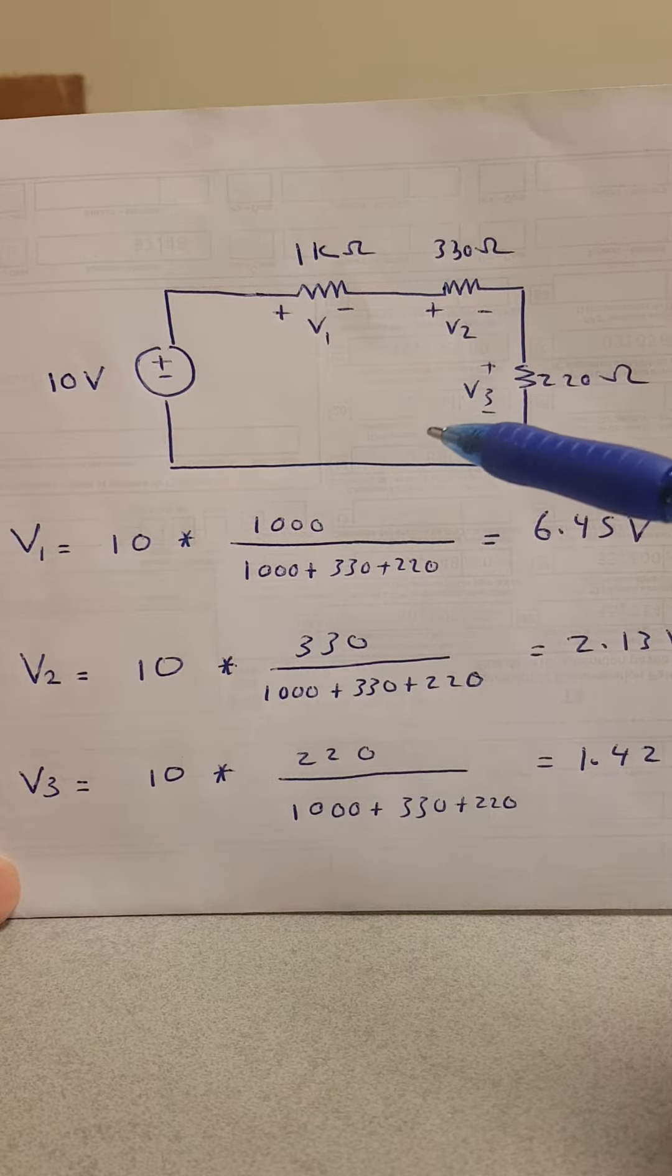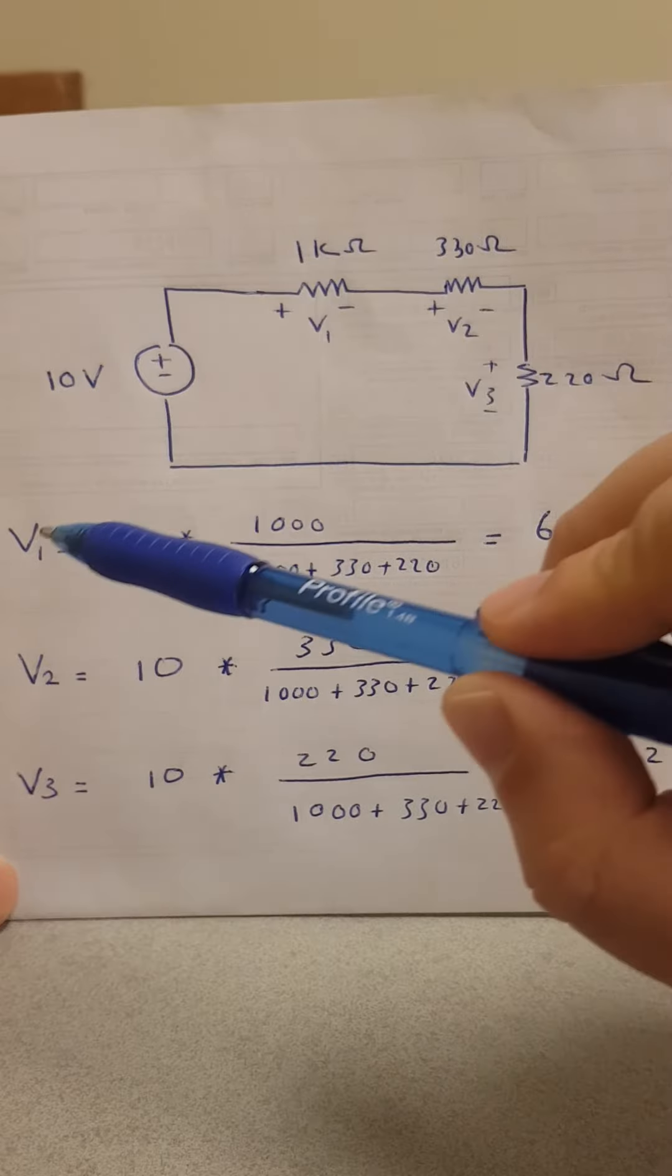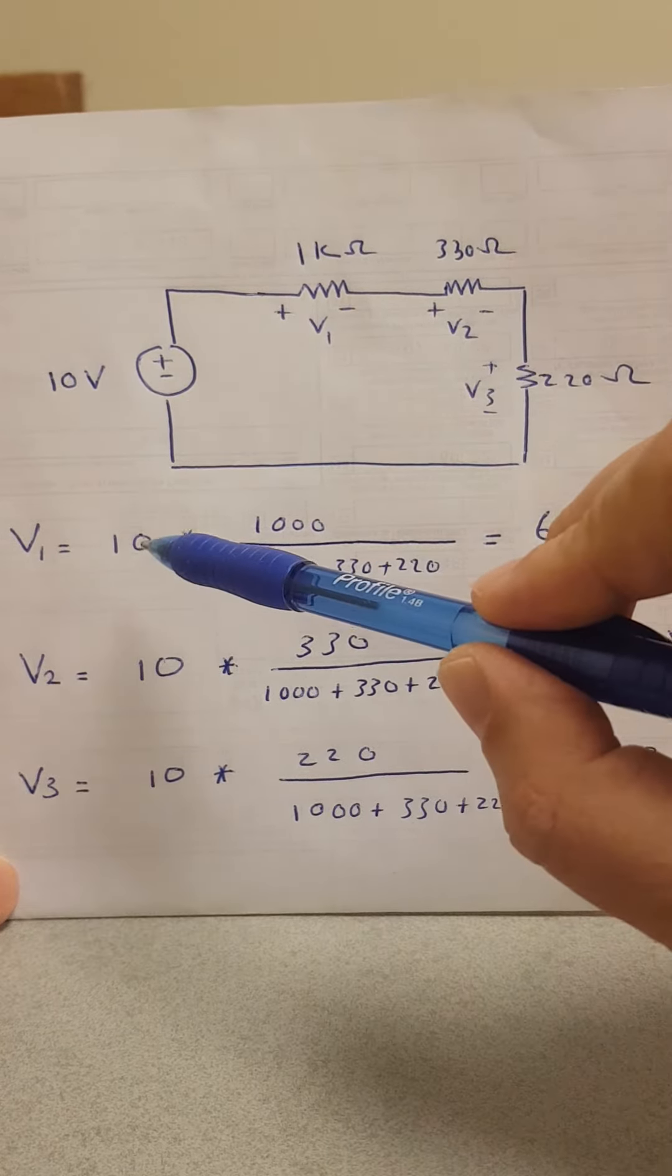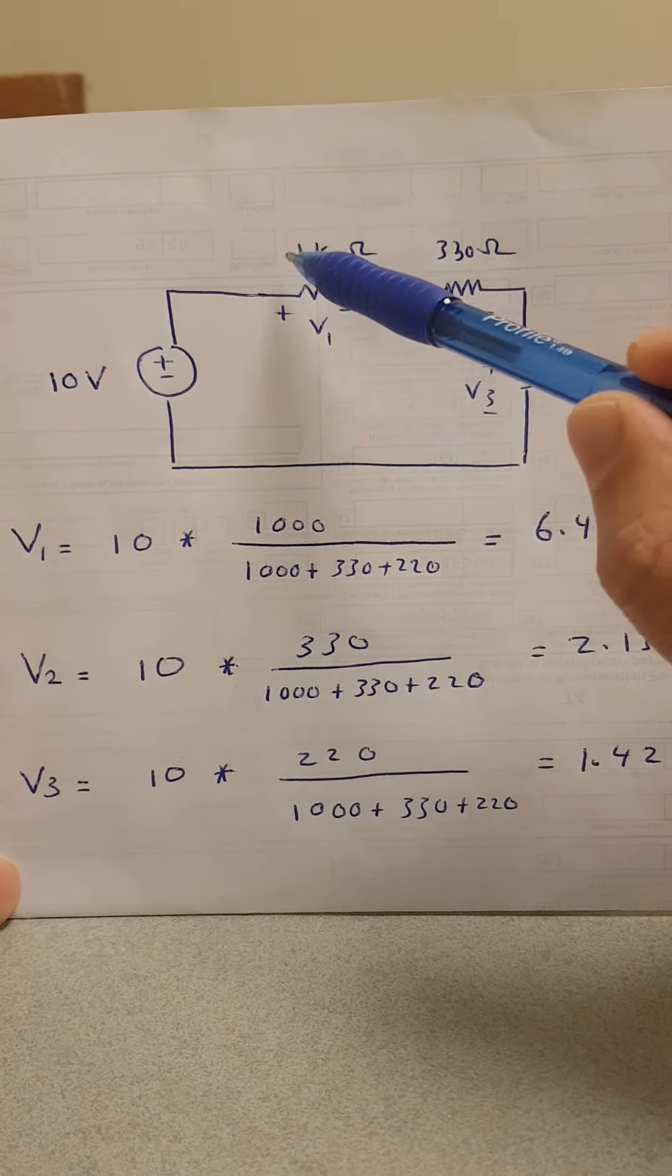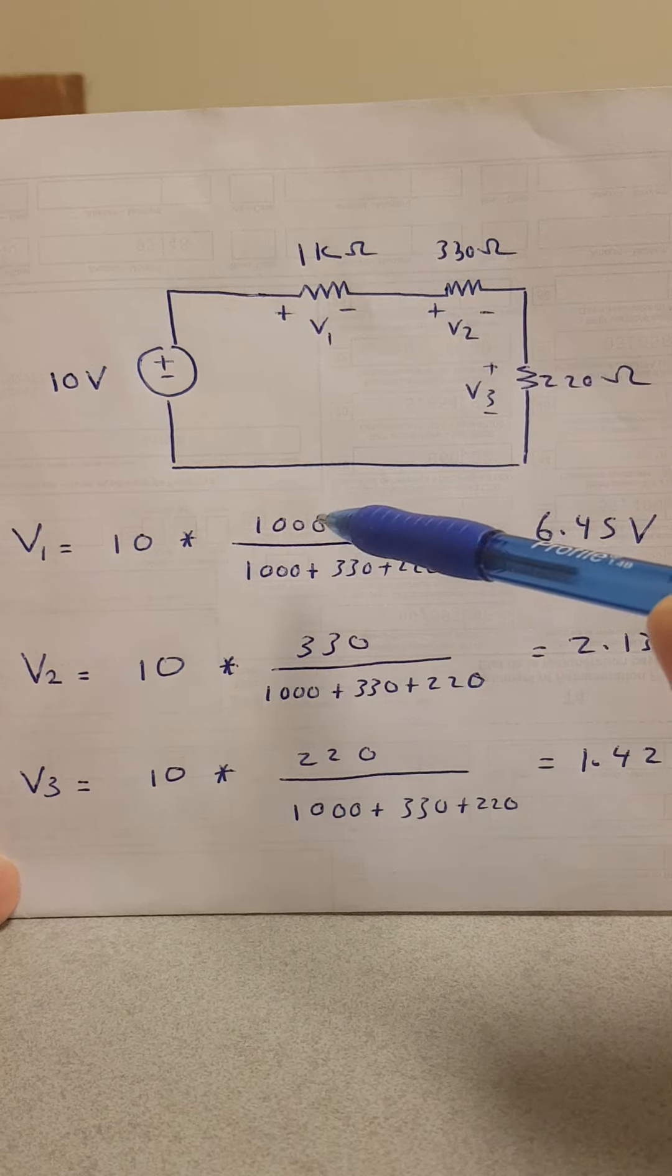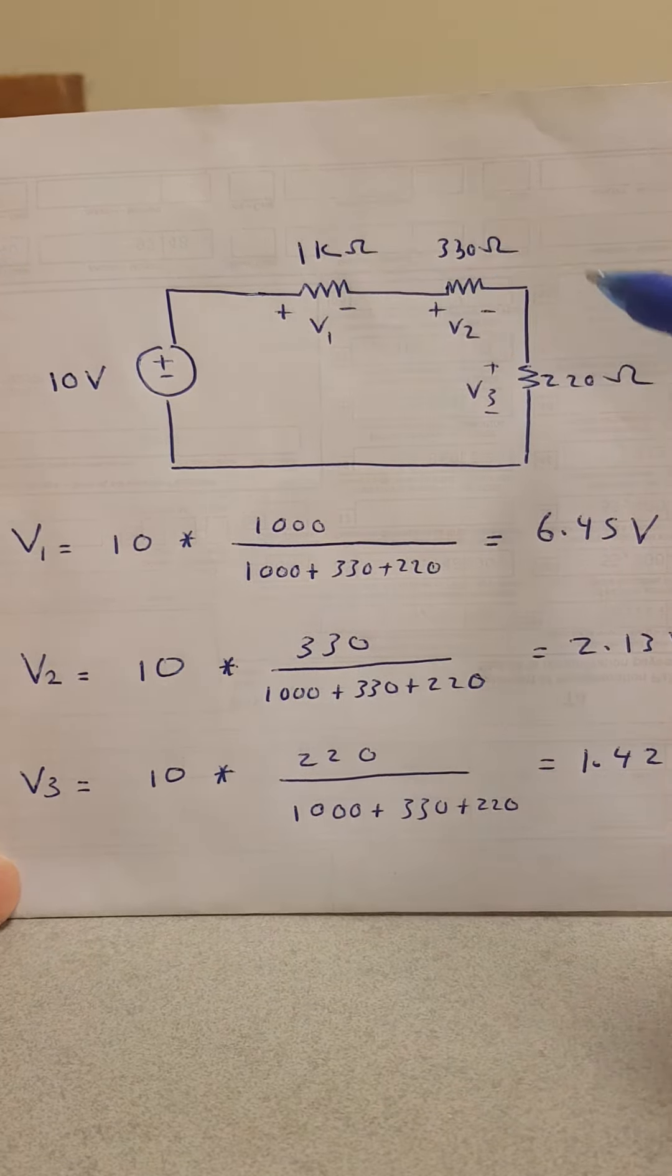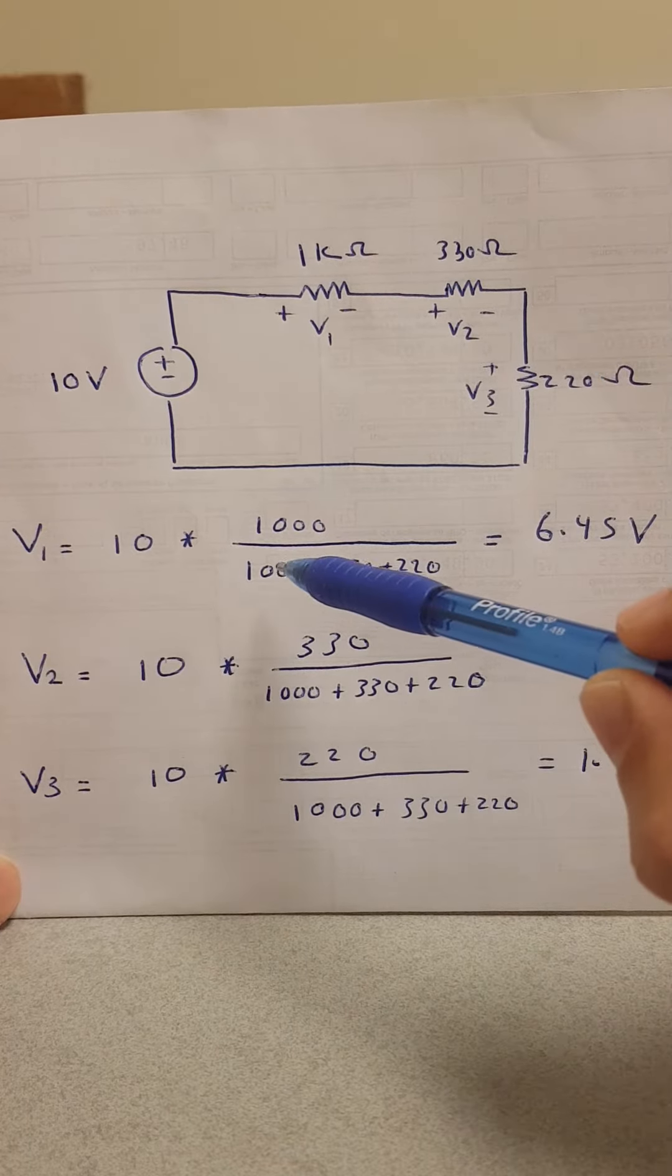So how can we find the voltage easily? If you want to find v1, v1 is equal to the source voltage, the 10 volt, times its own resistance which is the thousand ohm, divided by the summation of all resistors in series, meaning the thousand, the 330, and the 220.